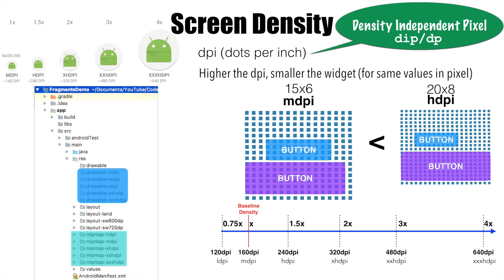An even better option is to use SVGs — Scalar Vector Graphics — to draw icons in the app instead of PNG files. This will significantly reduce the overall memory footprint of your APK. That's it about how screen density works while designing screen layouts and icons for supporting different density screens.